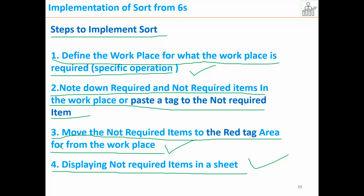The fourth step is displaying not-required items in a sheet. Once you move the unwanted items to the red tag area, we display them with the date, indicating these items have been moved from our workplace. They are not scraps — we need to inform the concerned departments or users. Unknowingly they may have left items there, so within three days they should take their items back. If no one takes them, we can scrap the items.